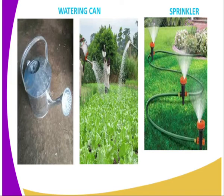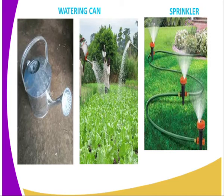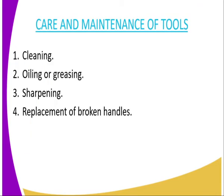Then we have the watering can and the sprinkler. Both of them are used when watering and irrigating crops in the farm. Then we have care and maintenance of tools.